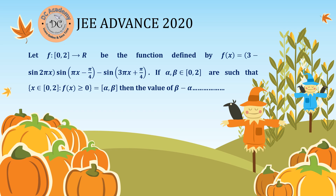Basically in this problem, we need to find out a closed interval [alpha, beta] where f(x) is greater than or equal to 0. So we need to find the values of x such that f(x) is greater than or equal to 0. That's the problem. Let's go ahead and solve it.